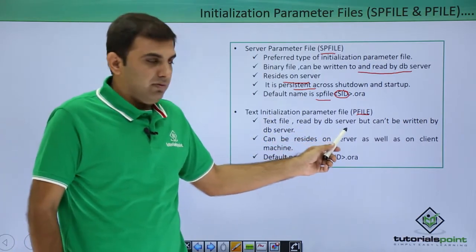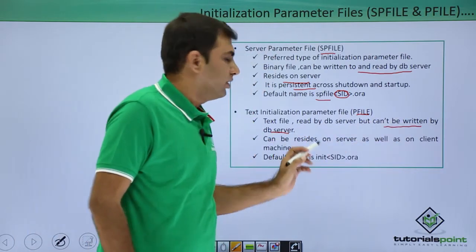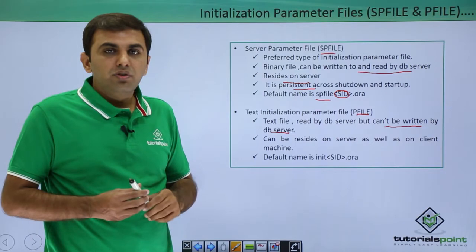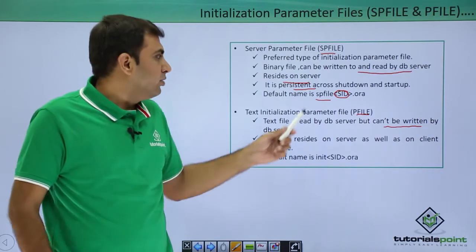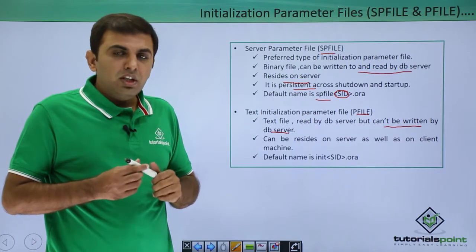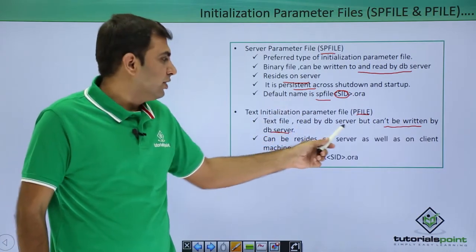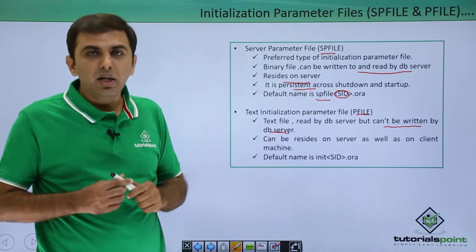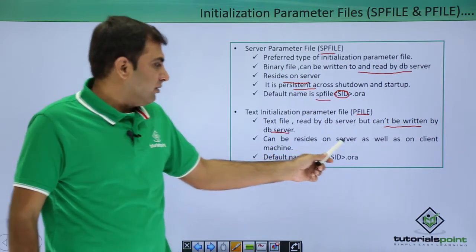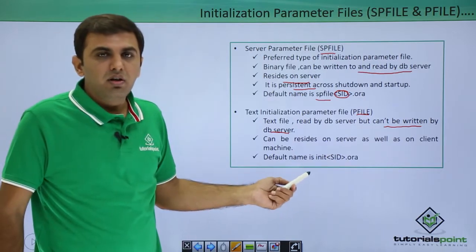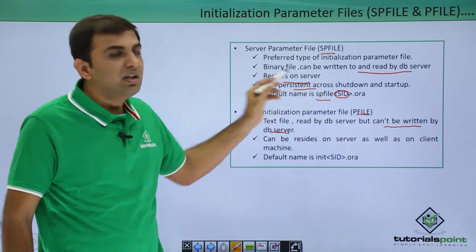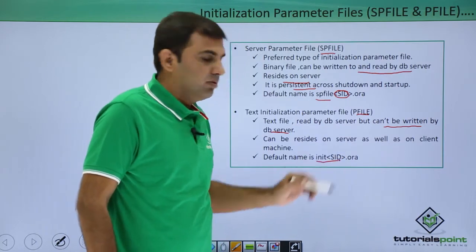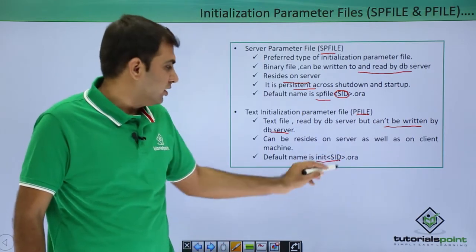The pfile is a text initialization parameter file — read by the database server but cannot be written by the server. If you want to do any kind of changes in the pfile parameter file, you need to do it manually. You cannot use Oracle commands; you need to edit it using the vi editor or any text editor. The pfile can reside on the server as well as on the client machine, but the spfile is always on the server. The default name of the pfile is init followed by your SID name dot ora.